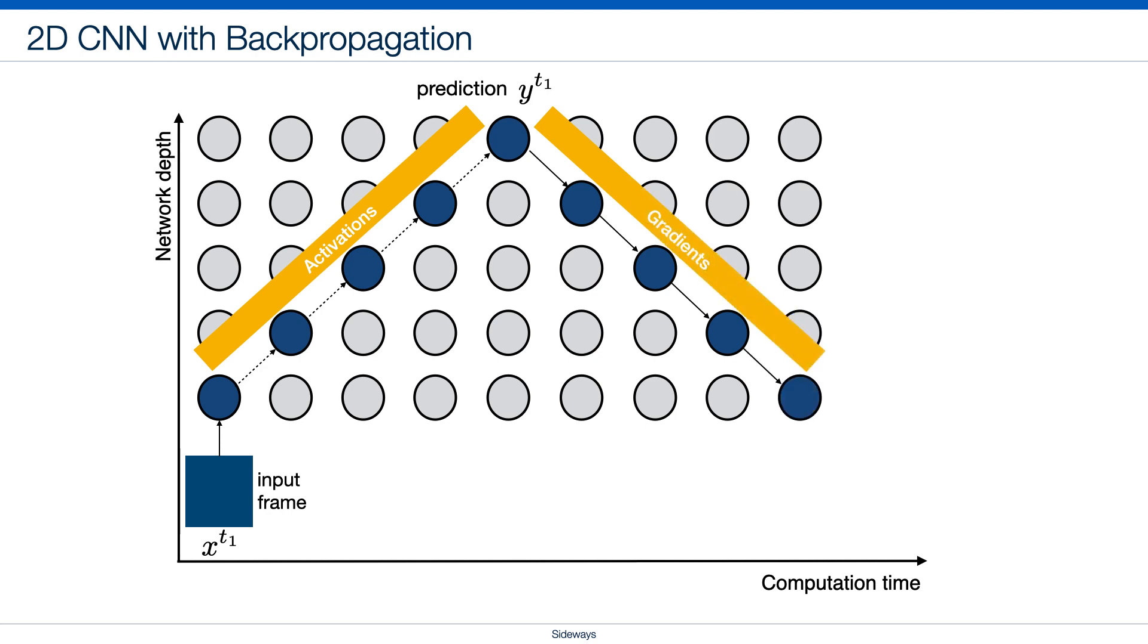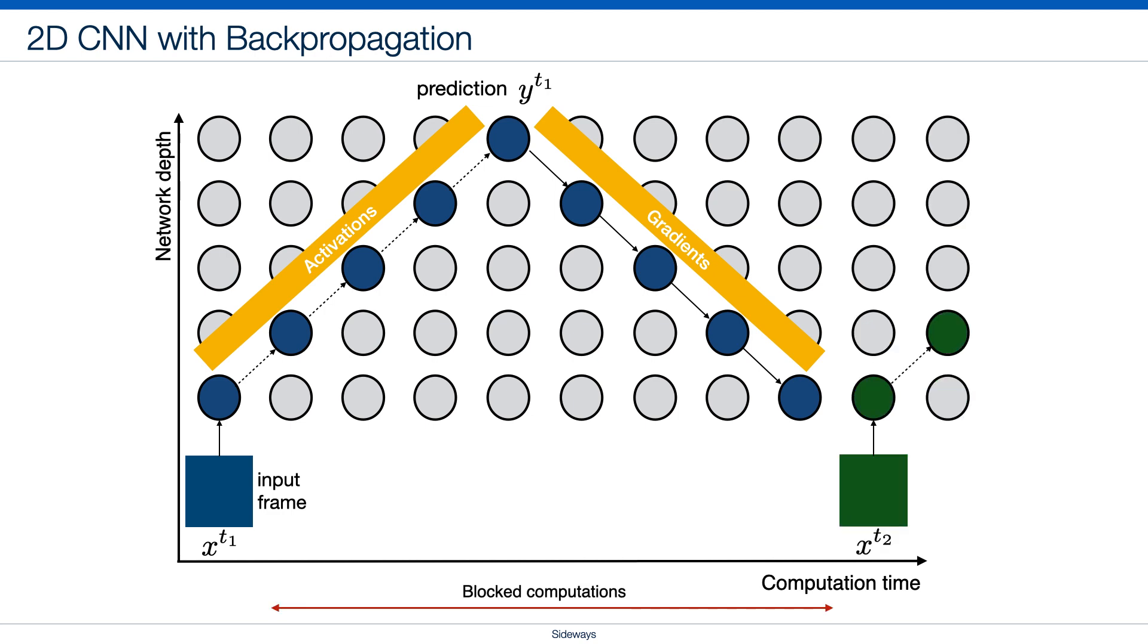Blue circles are layers with activations or gradients that originated in the blue frame. However, Backprop blocks computations which leads to low throughput and limits model parallelism.